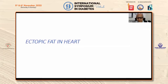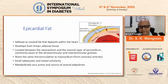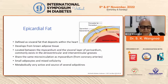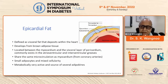Let's start with the ectopic fat in the heart. The different kinds of ectopic fat in the heart include the epicardial fat, which is defined as the visceral fat that deposits within the heart. It develops from the brown adipose tissue and is located between the myocardium and the visceral layer of the pericardium, commonly existing in the atrioventricular and interventricular groups. They share the same microcirculation as the myocardium and have small adipocytes in mixed cellularity. Metabolically, they are very active and a source of several adipokines.